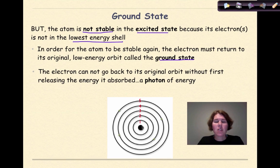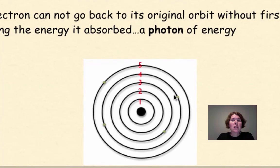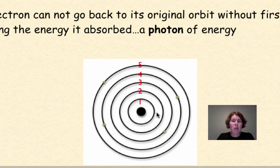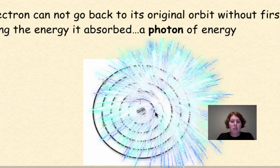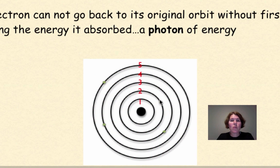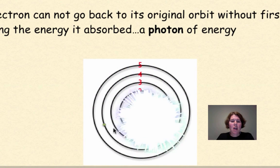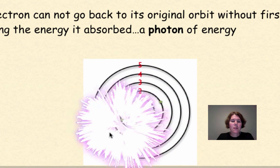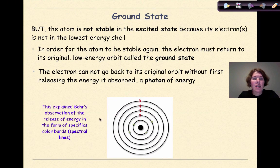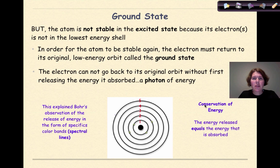The way that we would see this released energy is as photons of energy or light. Here again we have a simulation: these electrons are going to go from the excited state back down to ground state and release energy in the form of light. As a result, this explained Bohr's observation of the release of energy in the form of specific color bands or spectral lines. The key thing to remember here is conservation of energy: the amount of energy absorbed as the electron went from ground state up to excited state was equal to the amount of energy released as the electron went from excited state back down to ground state.